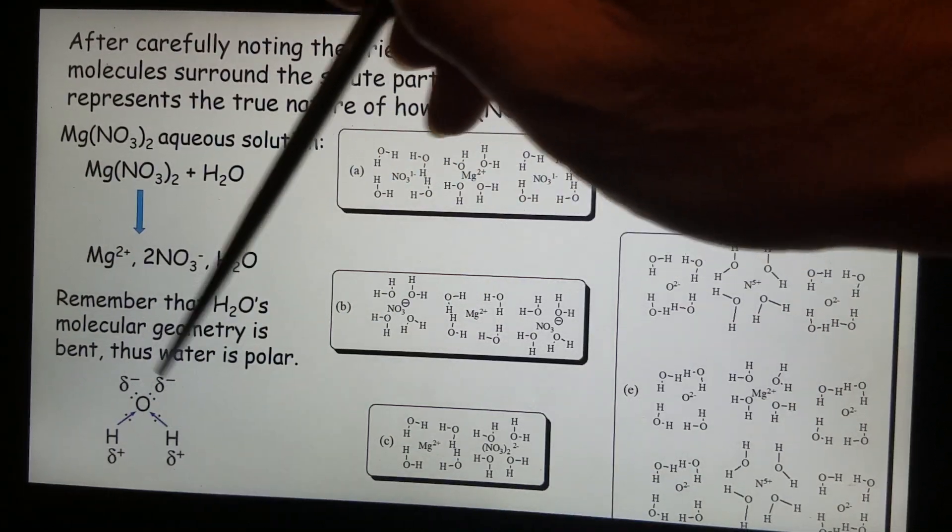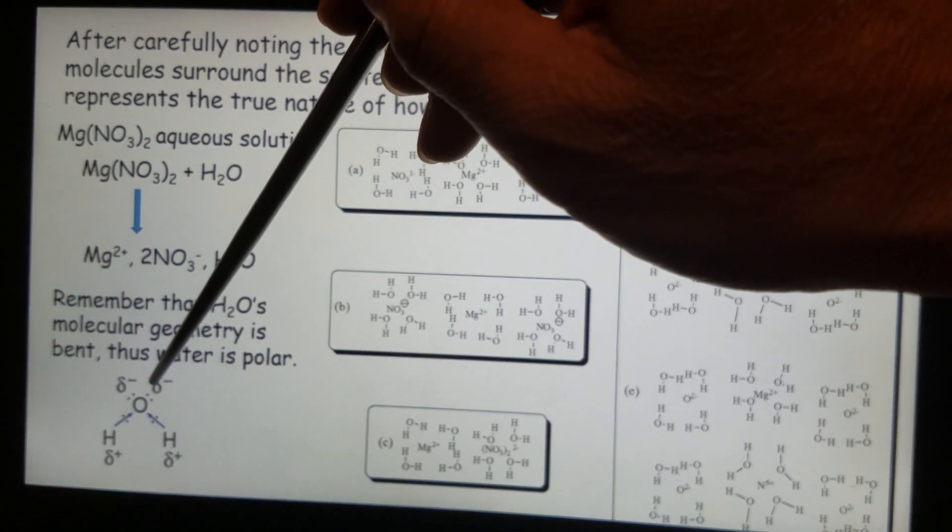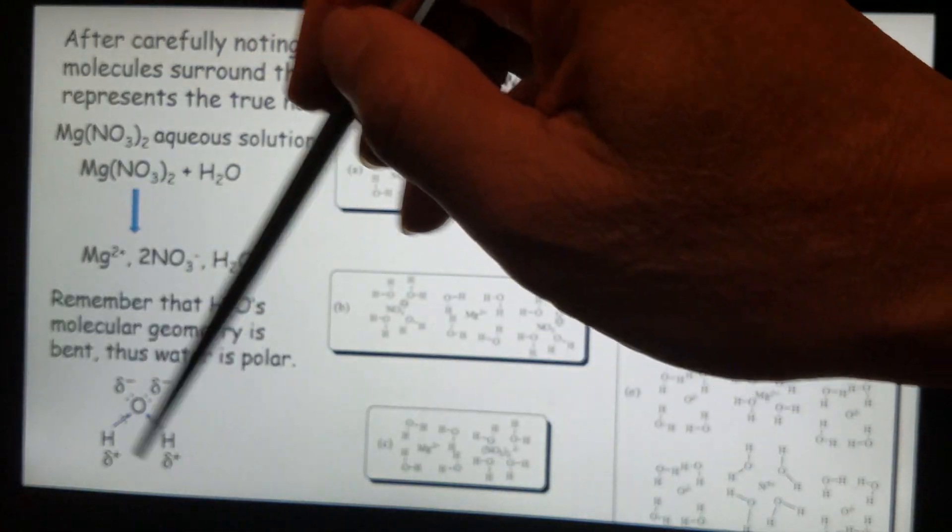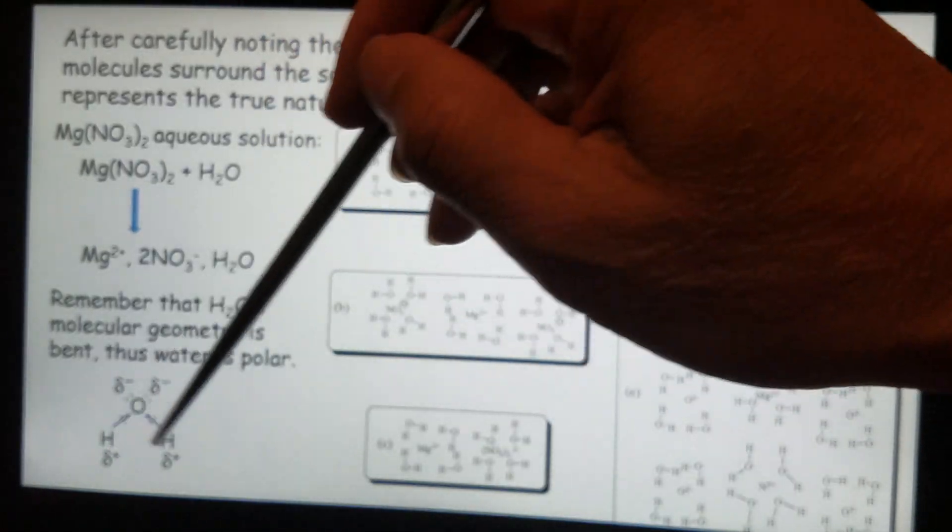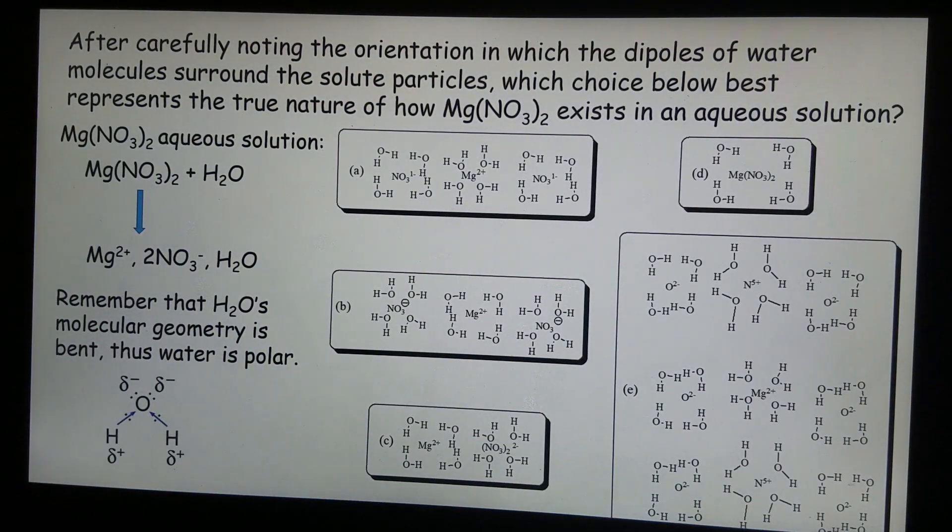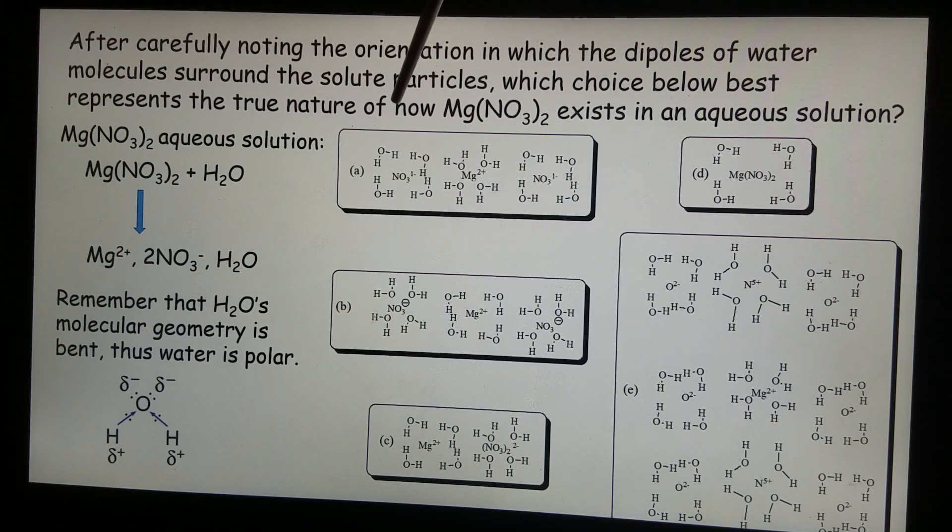This is the partial negative, and those are the partial positive ends. Now let's take a look at those choices.